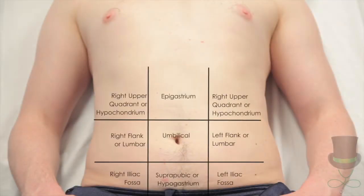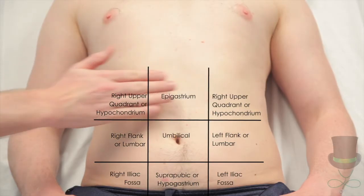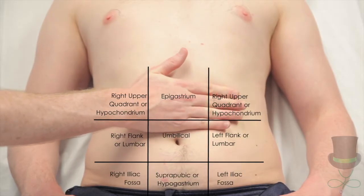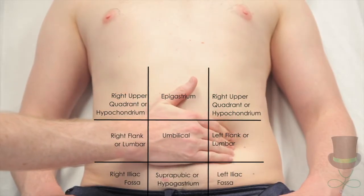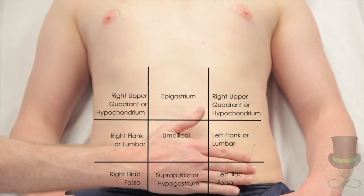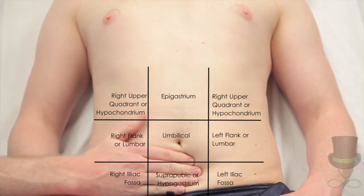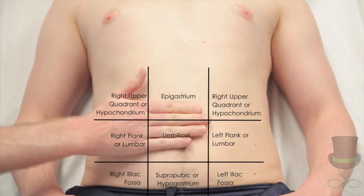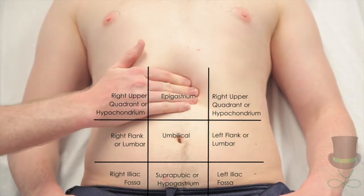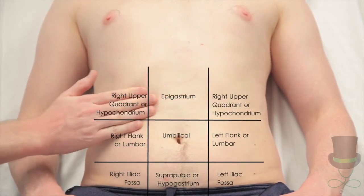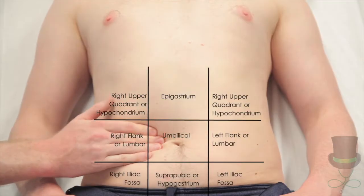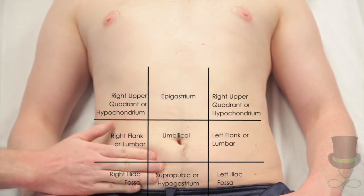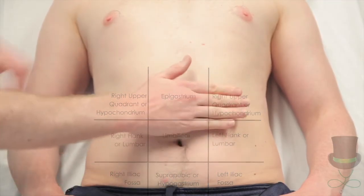Move through the nine regions of the abdomen with superficial palpation and then deep palpation. Superficial palpation elicits tenderness and identifies masses. Palpation pressure should be limited to the light pressure of flexion at the metacarpal phalangeal joint. If tenderness is present, be able to distinguish between tenderness, guarding, rigidity, and rebound tenderness.